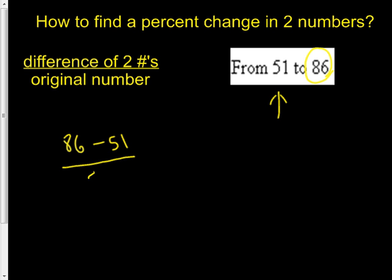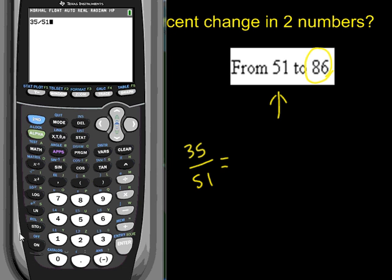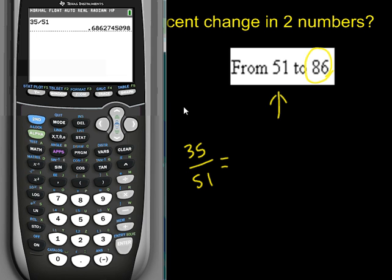What was the original number? The original number was 51, so we'll put that on bottom. 86 minus 51 will be 35, so now we just have to figure out what 35 divided by 51 is. You'll see that it's quite a bit of a decimal there.